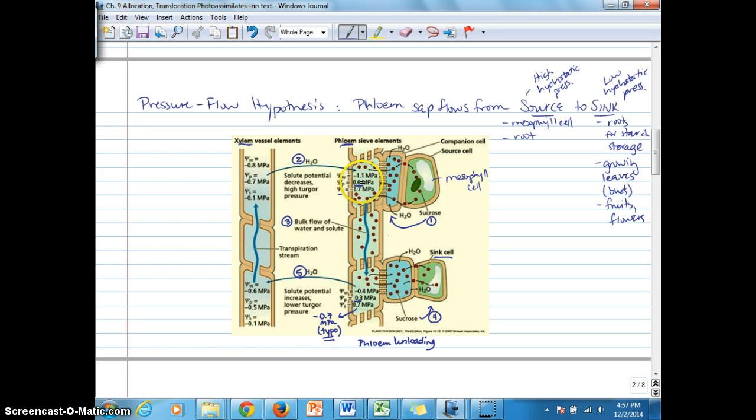The resulting water potential is negative 1.1 in this sieve element compared to the nearby xylem which is negative 0.8. Remember that water flows down a water potential gradient, and that's what drives water entering the sieve element and drives up the pressure inside. High concentration of sucrose pulls in water, essentially increasing the pressure inside the cell.